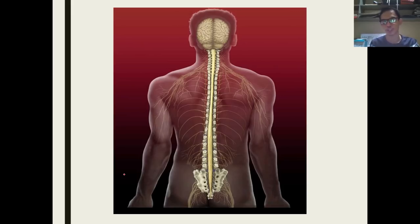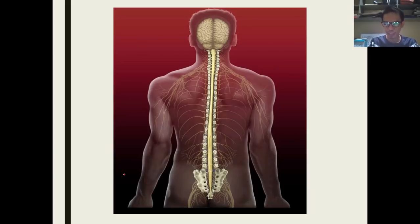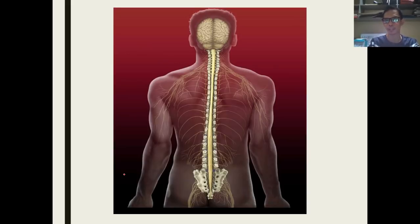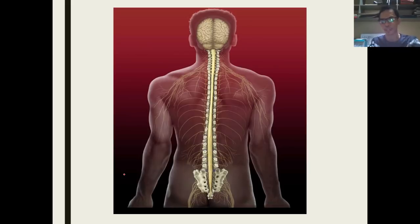Since your spinal cord is made up of soft nervous tissue, it is protected by a sort of vertebrae — the backbone. This protection is necessary because the spinal cord is made up of soft tissue that could easily be injured. As you can see, it is protected by the backbone, or the vertebrae.